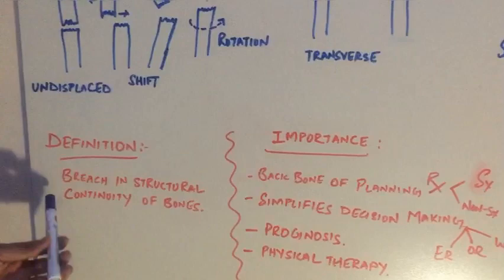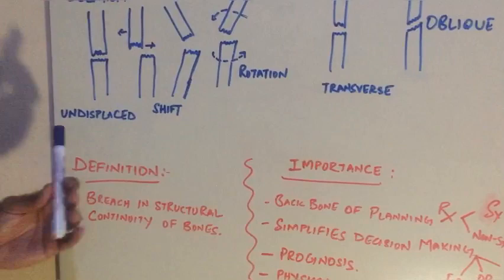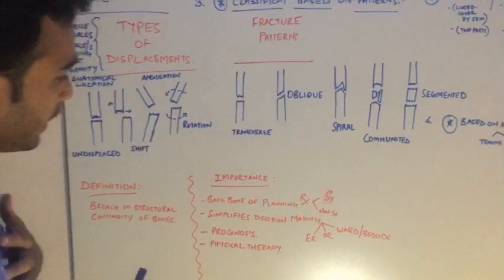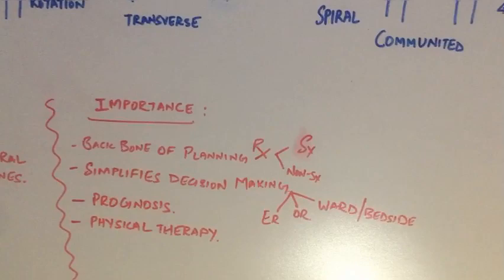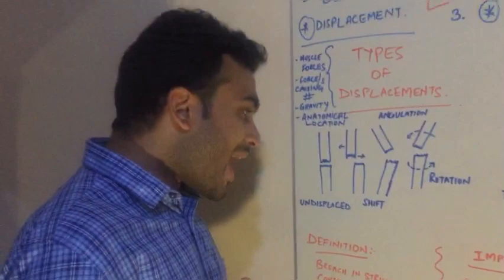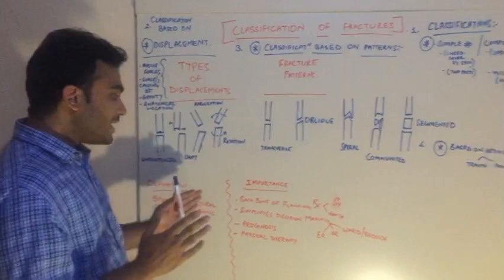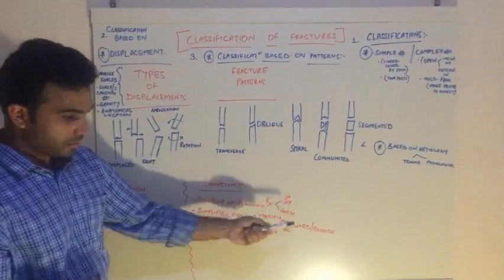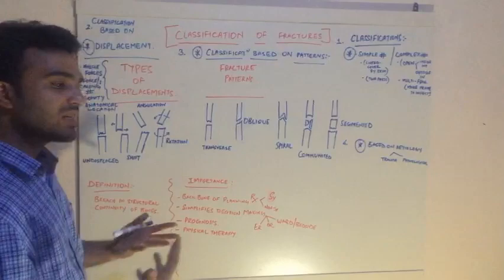Why is classification of fractures important to us? There are four specific points which give a lot of importance to classifying a fracture. By classifying fractures, you have a general idea - it's sort of a backbone of planning of treatment. Whether the fracture would need surgical treatment or non-surgical treatment, whether you want to conserve it or open up and put in a plate or use an external fixator. So classification of fractures makes the backbone of planning.